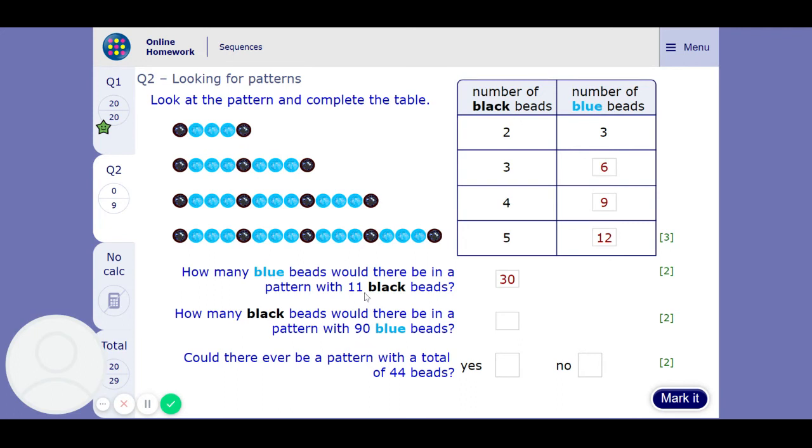So we can think about this being very closely related to our 3 times table. So for the 11 black beads, if we take 1 off the starting black bead, then what we're left with is 10 times 3 to make 30. So if we look at the same thing here, we've got 30 times 3 will make our 90. But we've got the extra black bead at the start, so there's going to be 31.